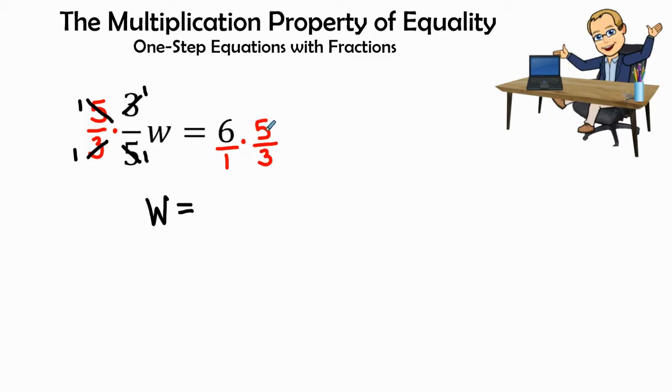Now, 6 times 5 on the right-hand side will equal 30. And 1 times 3 in the denominator would be 3. Now, if I simplified 30, how many times does 3 go into 30? And the answer is 10 times. So my correct answer is W equals 10.